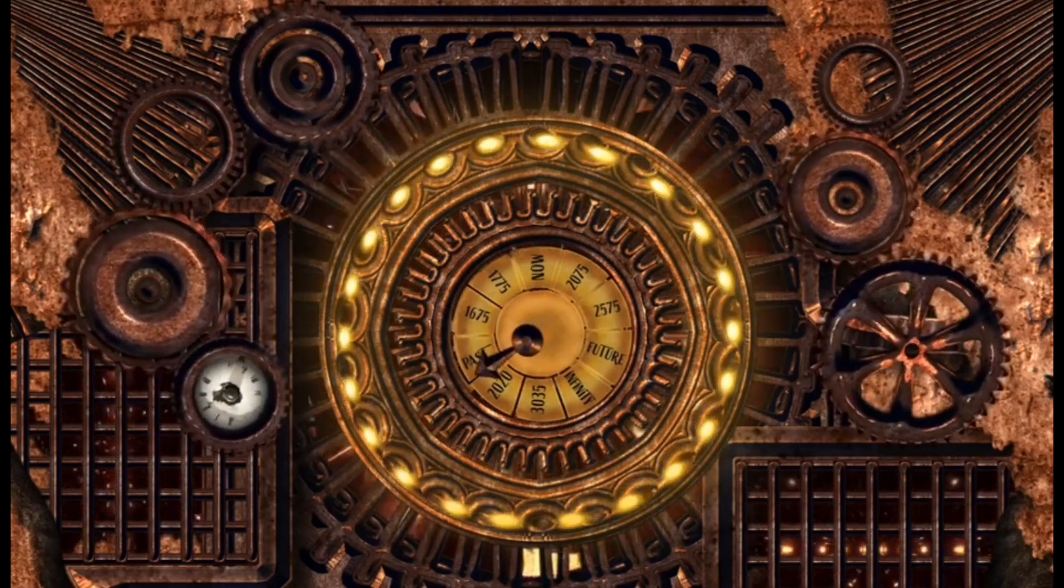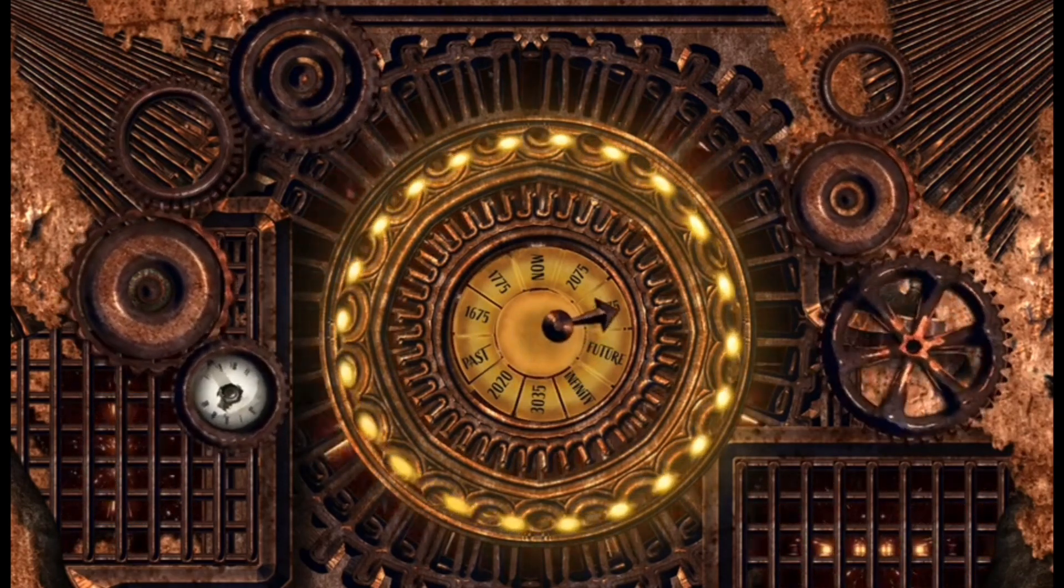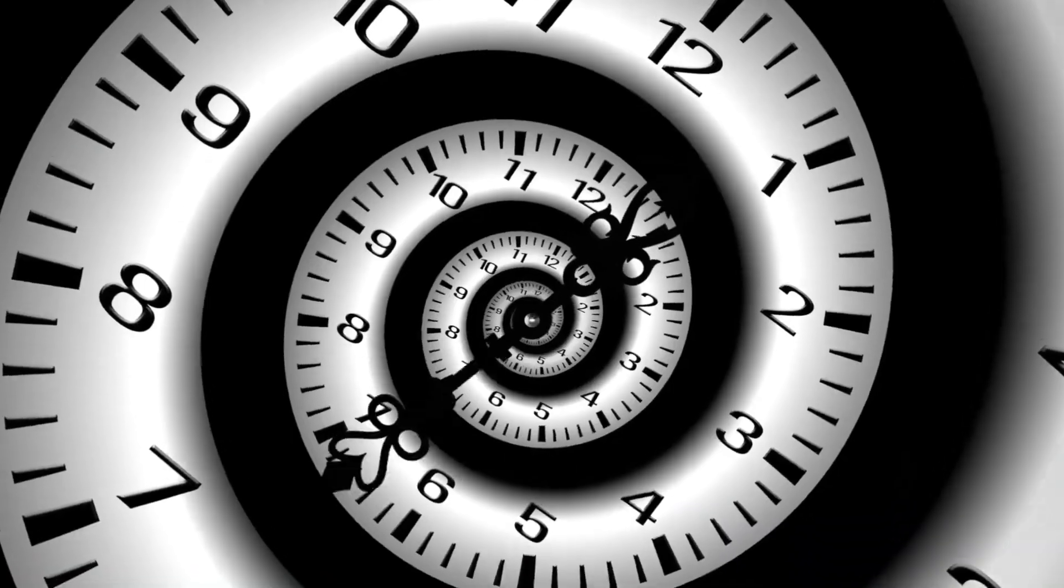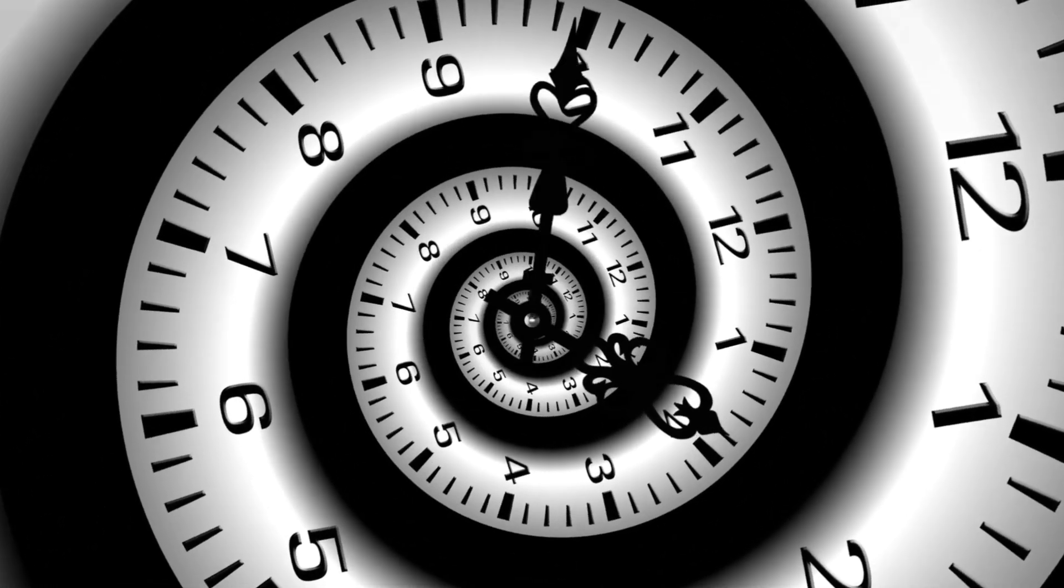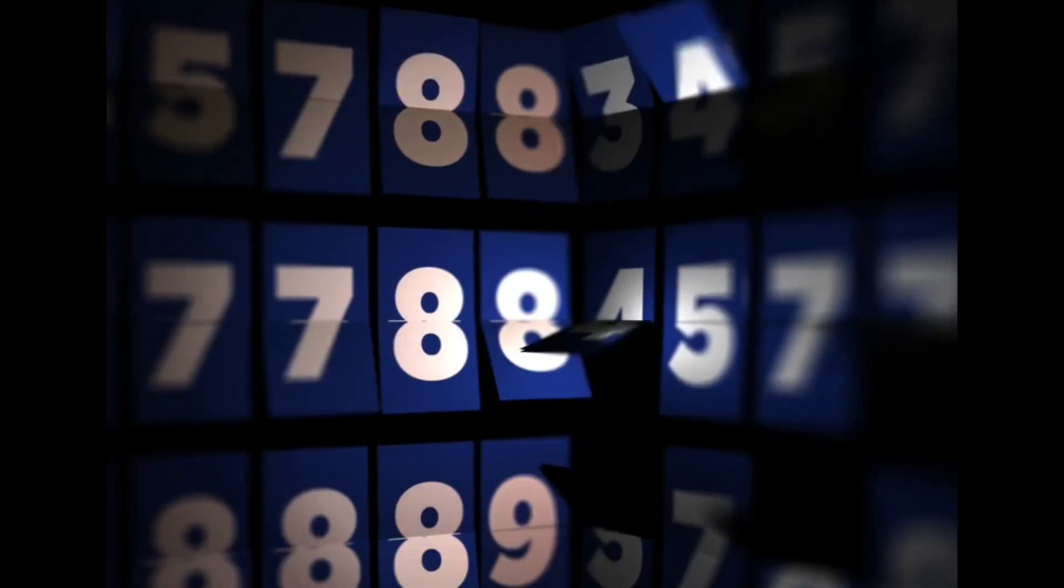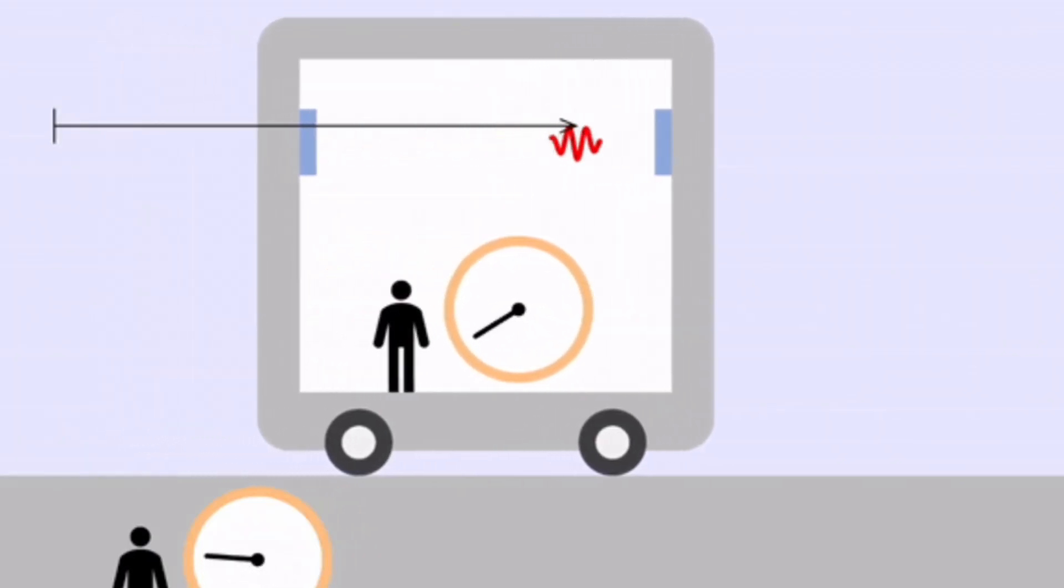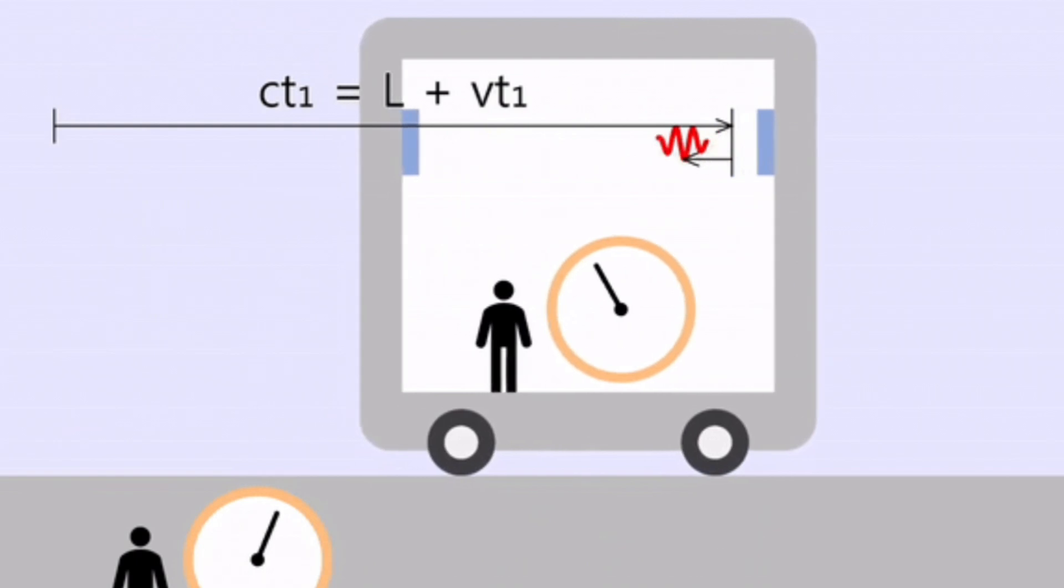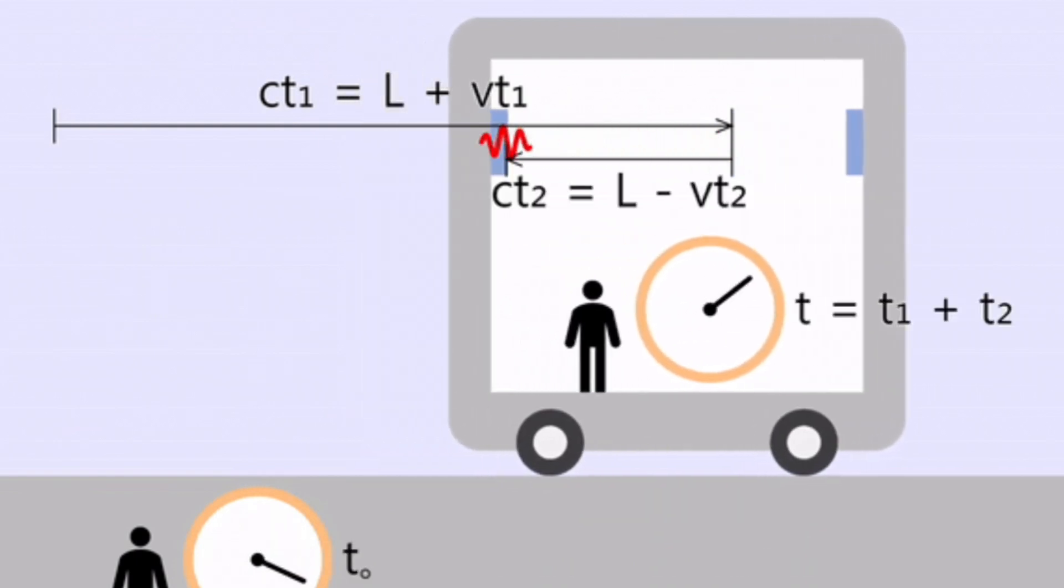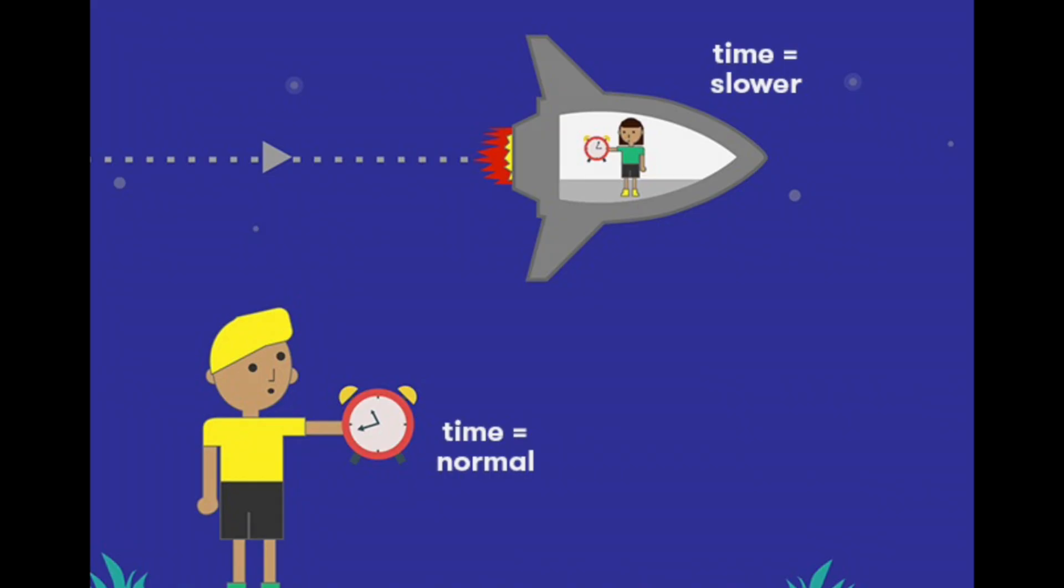This revelation alone challenges our intuitive understanding of time. For example, according to relativity, time moves slower for objects traveling close to the speed of light. This phenomenon, known as time dilation, has been experimentally verified. But if time can stretch and compress, does it mean our experience of it is just a perspective?